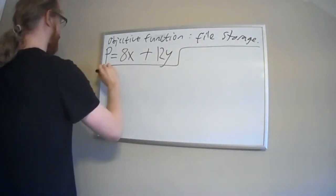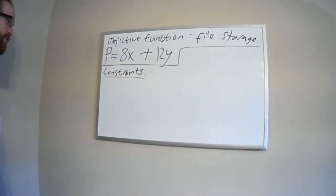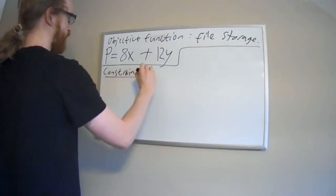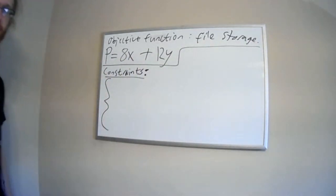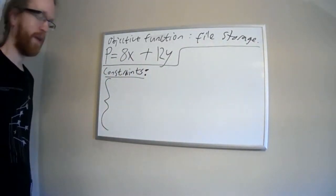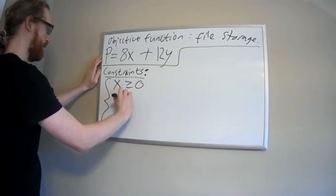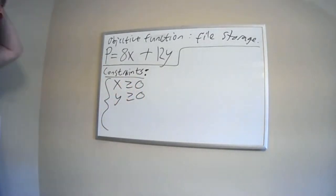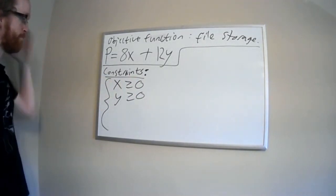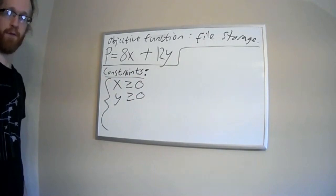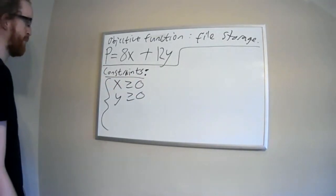Now I want my constraints — the system of inequalities. First, I'll get the implicit constraints out of the way. These are not given explicitly in the problem but must be written down for it to make sense: x ≥ 0 and y ≥ 0. This makes sense because x and y represent the number of cabinets to buy, and it would make no sense to purchase a negative number of cabinets.